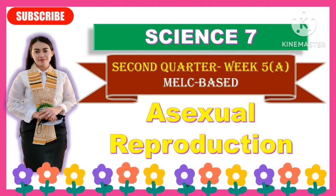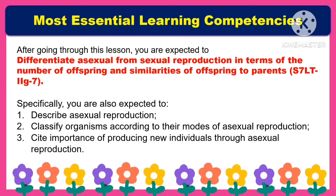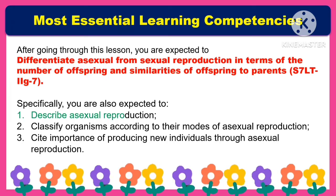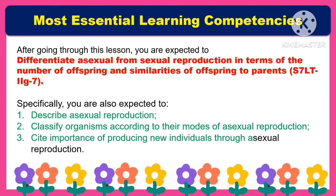This topic is MELC-based. For the most essential learning competencies, after going through this lesson, you are expected to differentiate asexual from sexual reproduction in terms of the number of offspring and similarities of offspring to parents. Specifically, you are also expected to: first, describe asexual reproduction; second, classify organisms according to their modes of asexual reproduction; and third, cite the importance of producing new individuals through asexual reproduction.